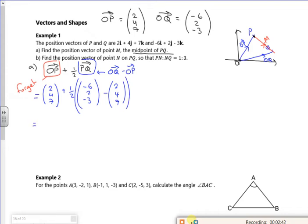So let's have a look. What have we got then? So I've got (2, 4, 7). I've got a half of, so -6 minus 2 is -8, 2 minus 4 is -2, -3 minus 7 is -10. I'm doing a half of that though. So I've got (2, 4, 7) plus a half of.